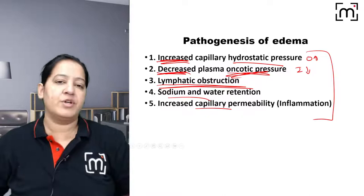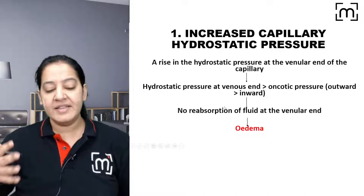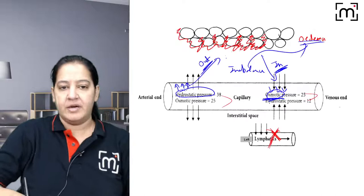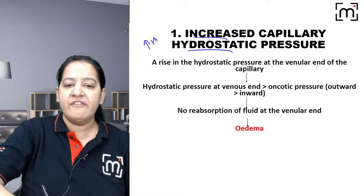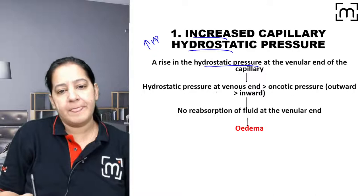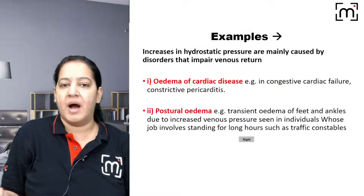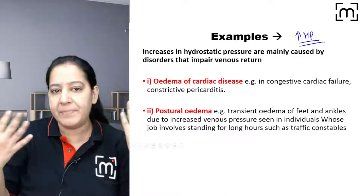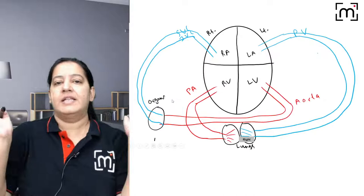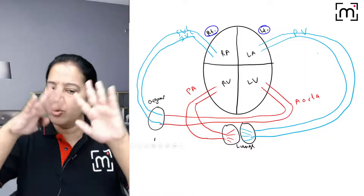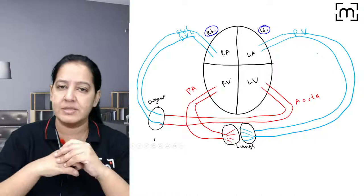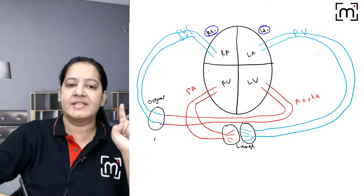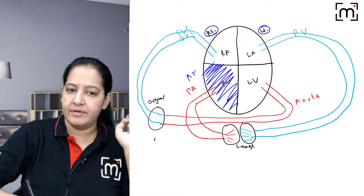Now let us study examples for each cause. The first cause is increased hydrostatic pressure. If hydrostatic pressure increases while oncotic remains the same, the outward force is greater than the inward — imbalance results and edema occurs. Can you tell me examples of increased hydrostatic pressure?